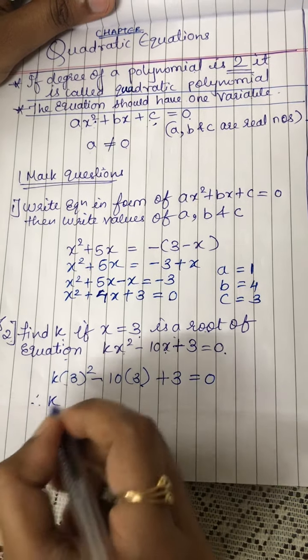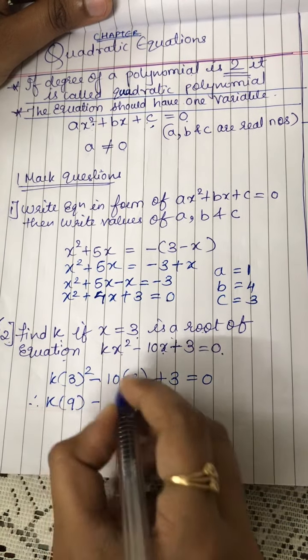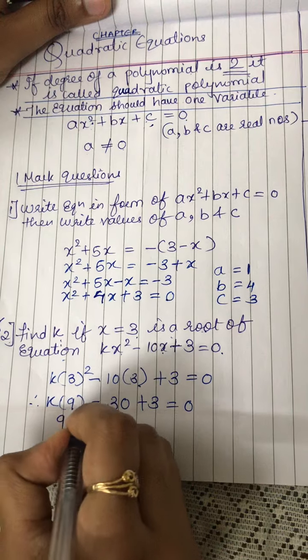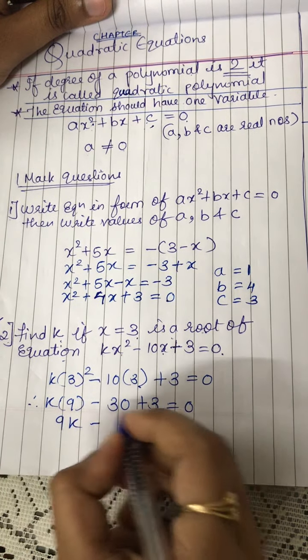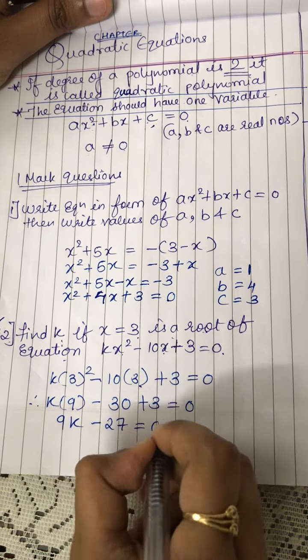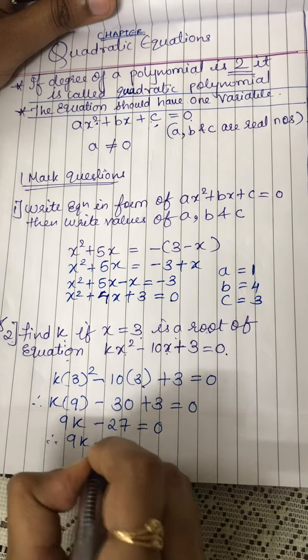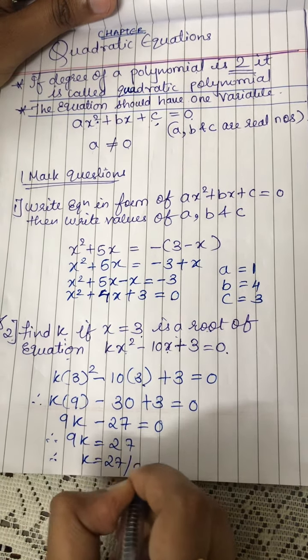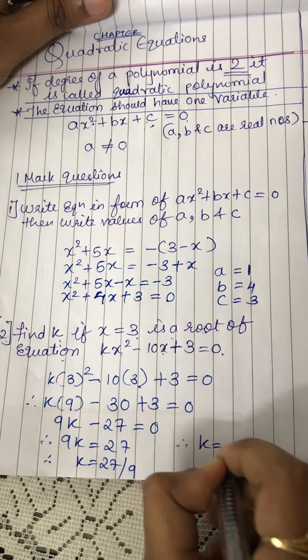By solving, 3 square is 9 minus 10, 3 is 30 plus 3 is equal to 0. 9k minus 30, 27 is equal to 0. Therefore, 9k is equal to 27. Therefore, k is equal to 27 upon 9. Therefore, k is equal to 3.